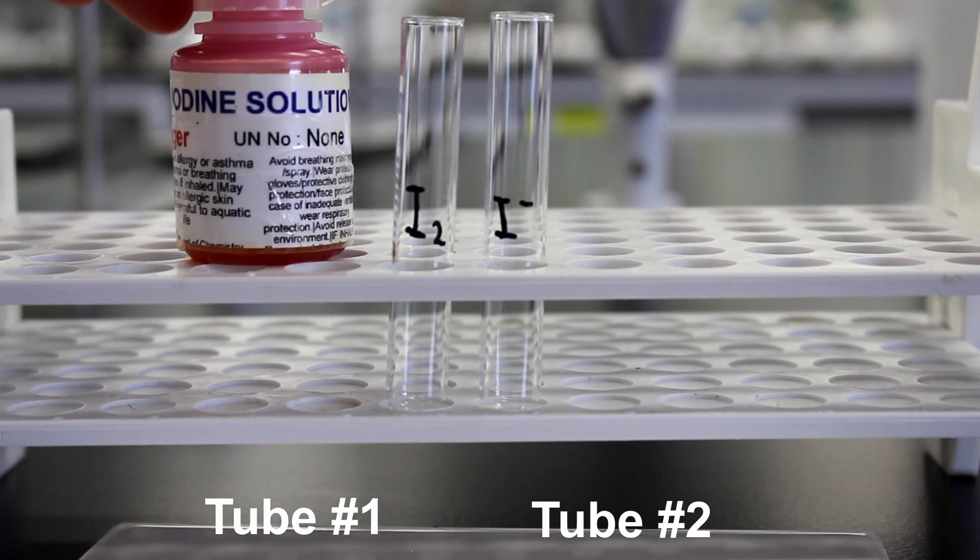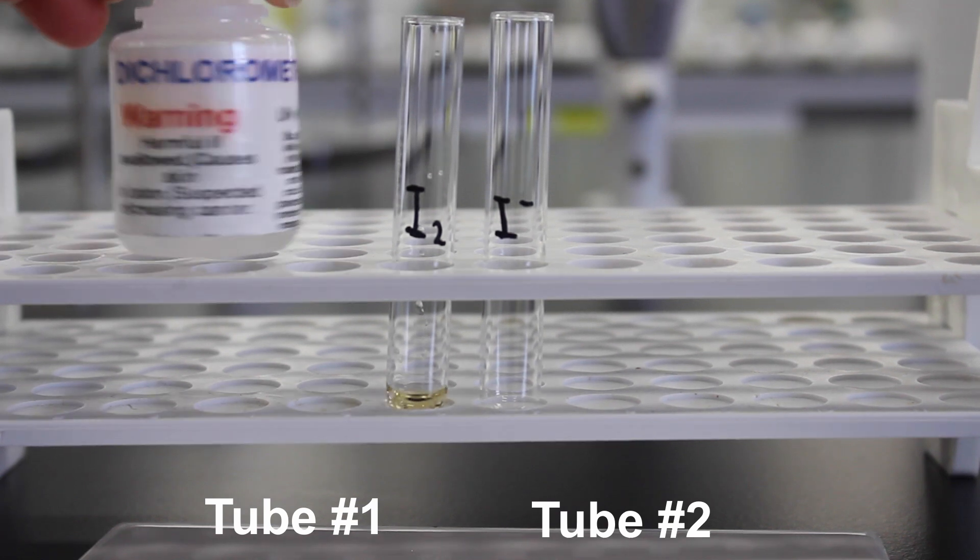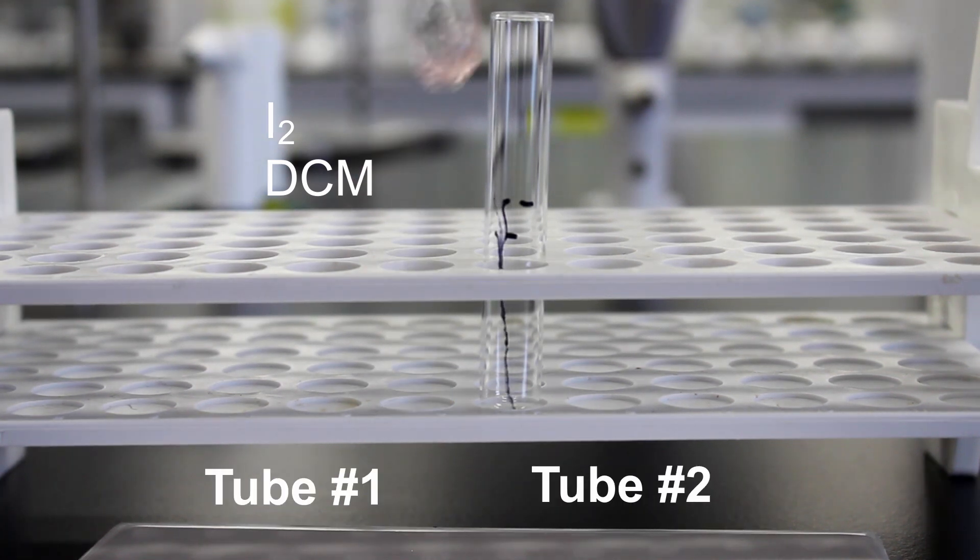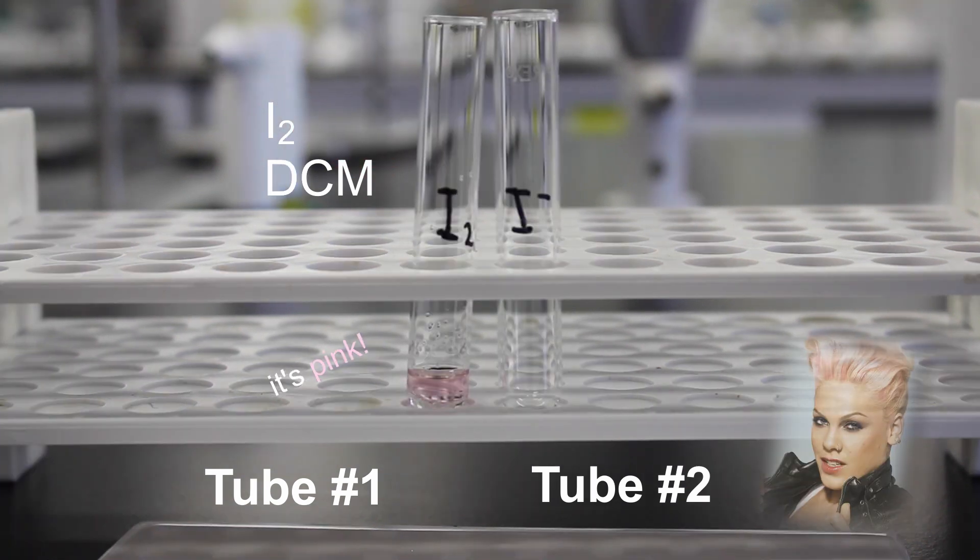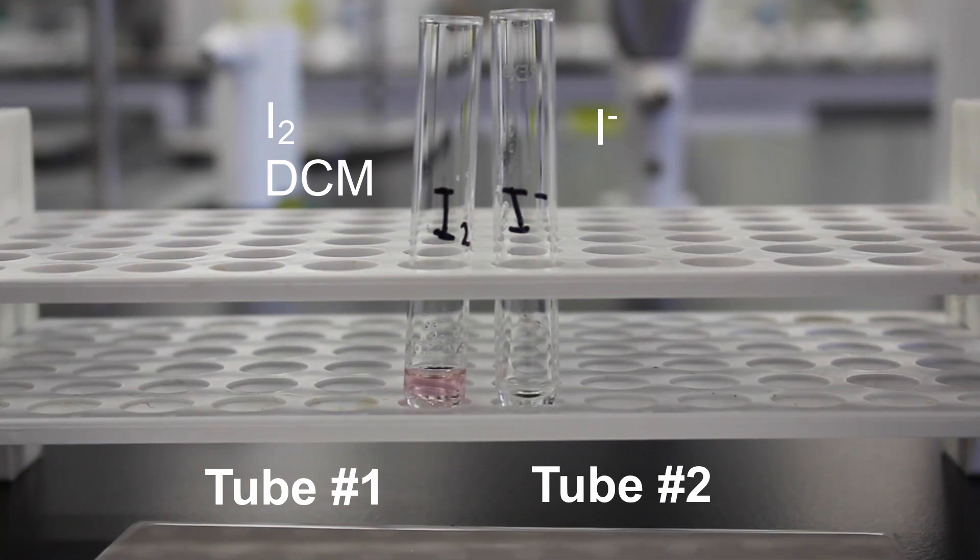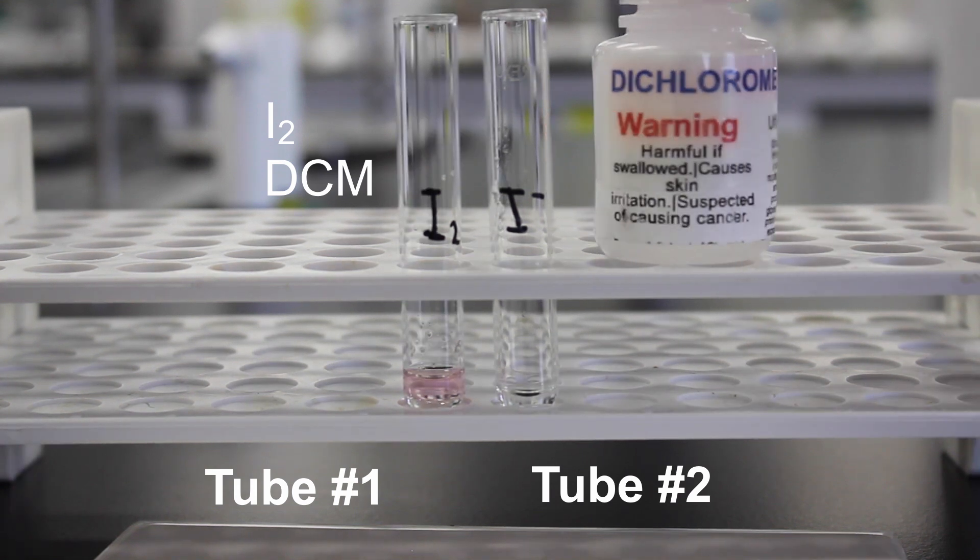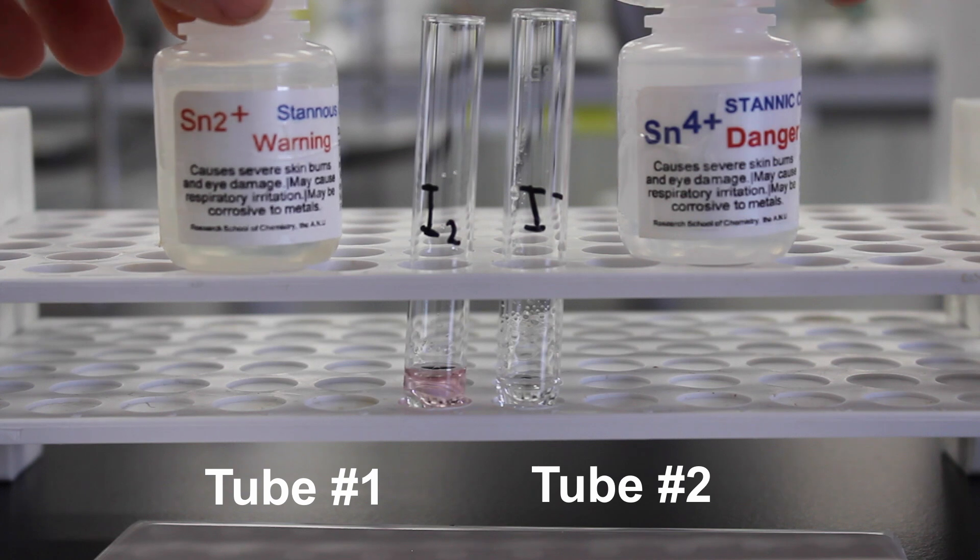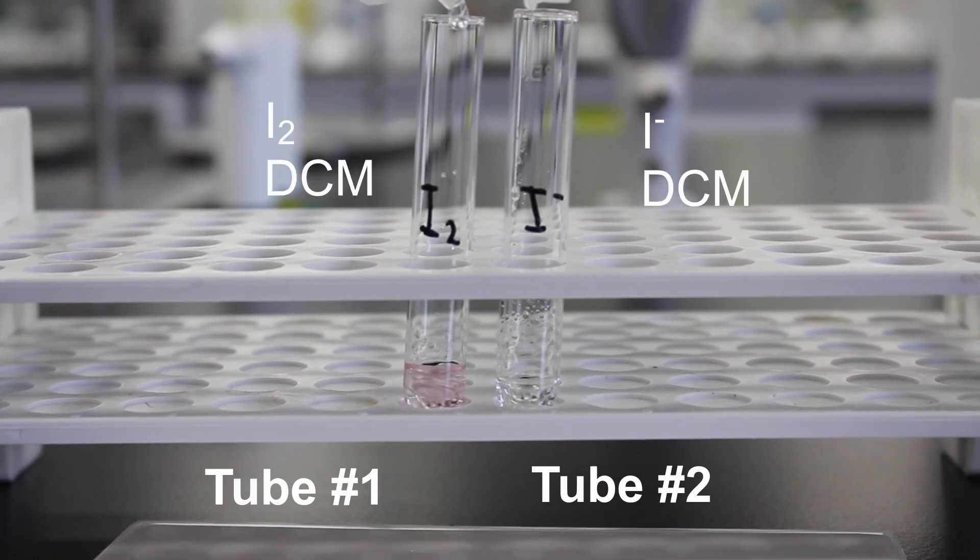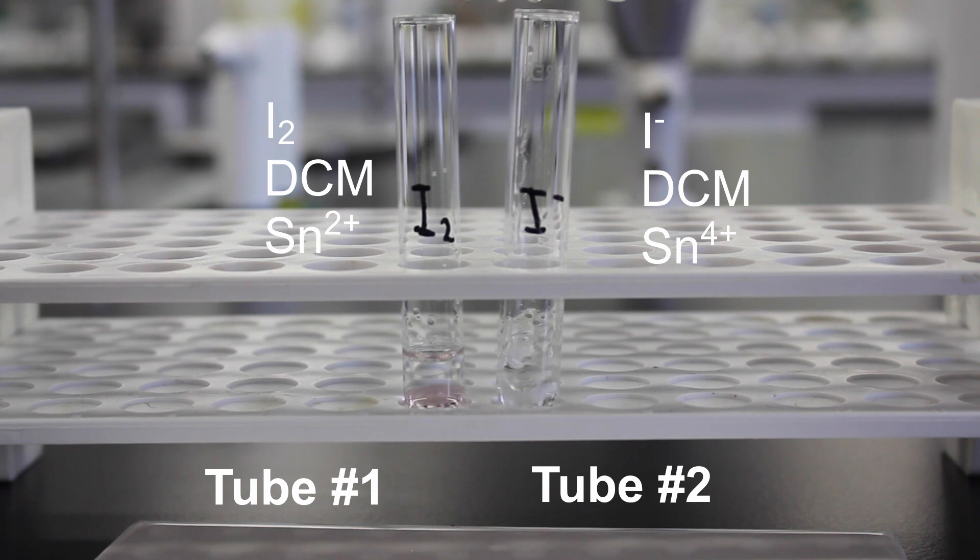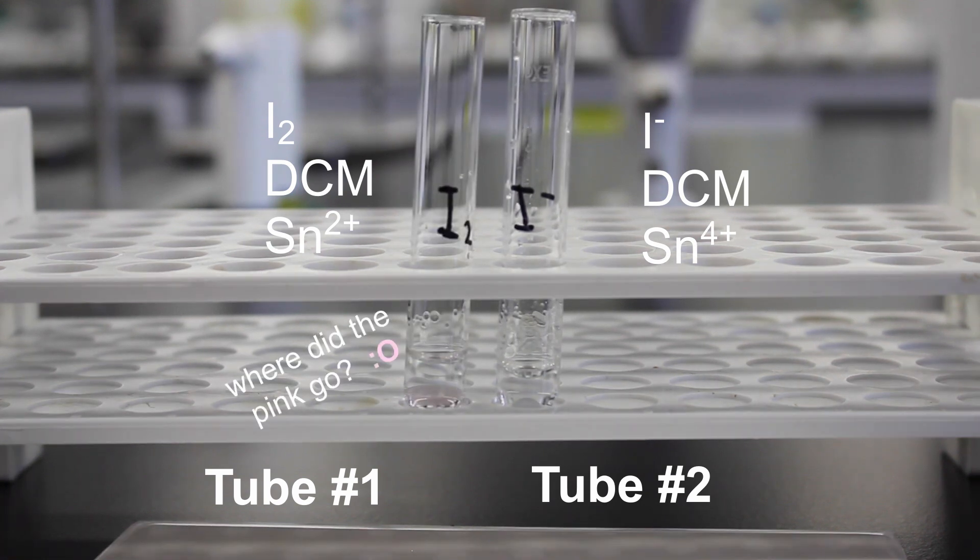To your first test tube, add a few drops of your I2 iodine solution. We'll again be using dichloromethane to compare these two experiments. To your second test tube, add your iodine ions and add some more DCM. We will now add the appropriate tin couples to each test tube. In the first test tube, add tin 2+. And in the second test tube, add your tin 4+. Remember that dichloromethane tests for the presence of I2, and have a think about what it might mean to see it disappearing.